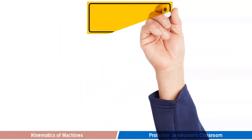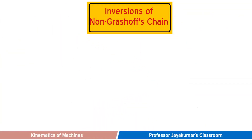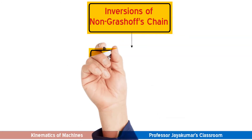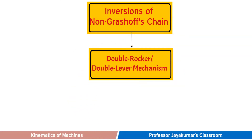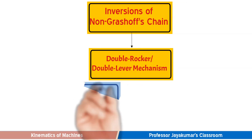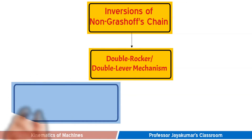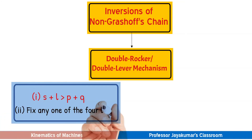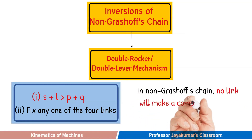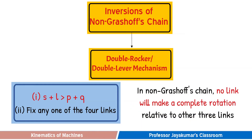The non-Grashof's chain will have only one inversion — namely double rocker, also known as double lever mechanism. The two conditions of non-Grashof's chain inversion are: S plus L is greater than P plus Q, and any one of the four links can be fixed — that will result in a double rocker mechanism. As we are aware, a non-Grashof's chain will not result in rotational motion of any link.